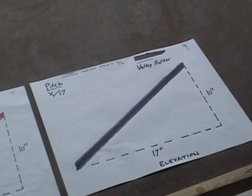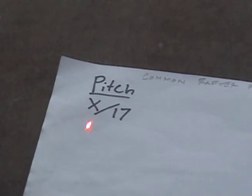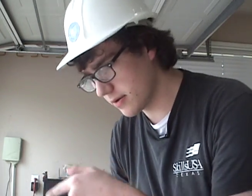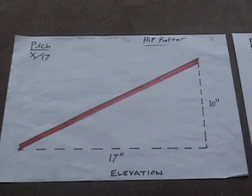Now let's look at the hip and valley rafters. One big difference is that the pitch of hip and valley rafters is always expressed as some number over 17, not 12. Why is the unit run for a hip and valley rafter 17 instead of 12? For this particular rafter, we have a rise or height of 10 inches to a run length of 17 inches. The pitch of this rafter is thus 10 over 17. So for every 17 inches of run length, the rafter rises 10 inches in height.